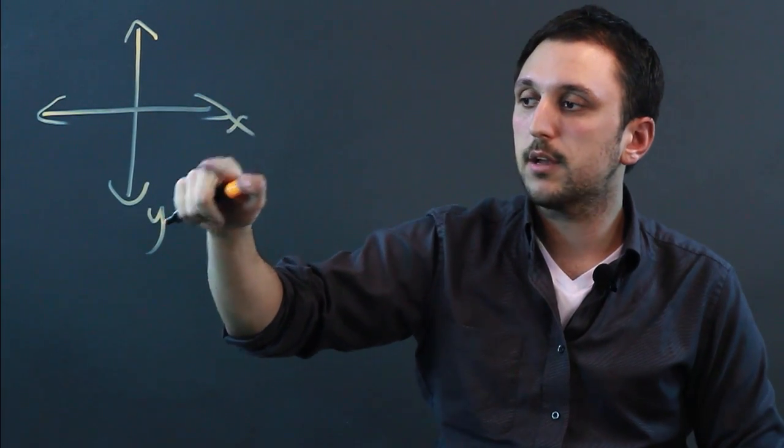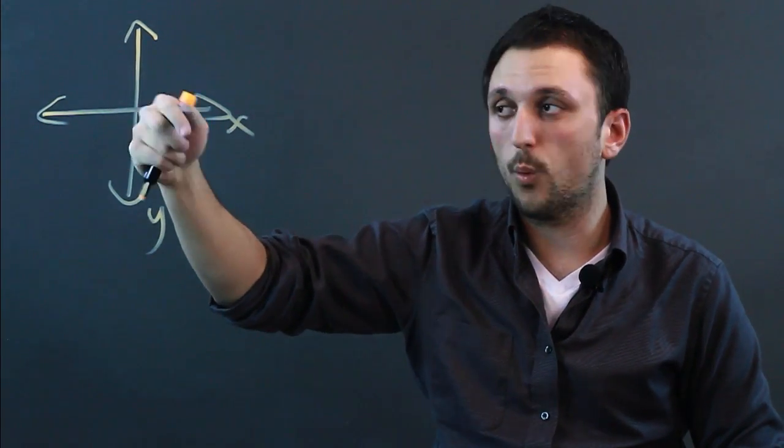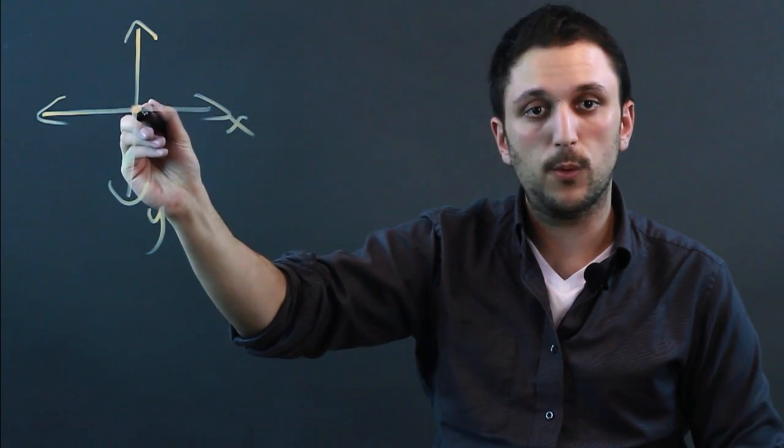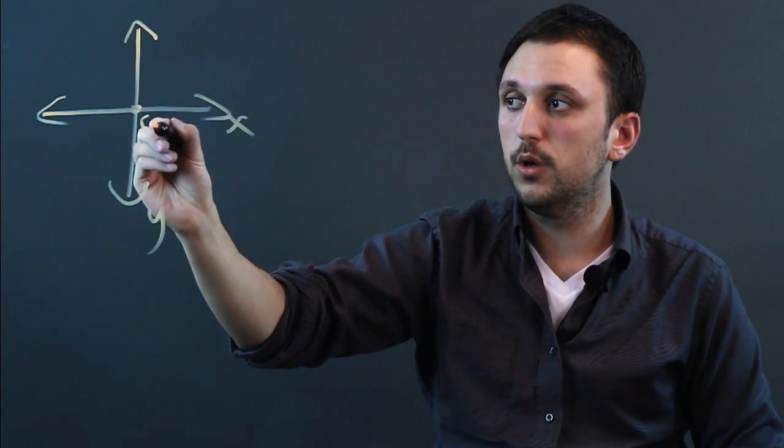Now, the x and y create the two-dimensional coordinate system. So this would be the origin point here, and that's called 0, 0.